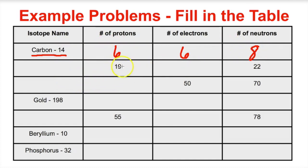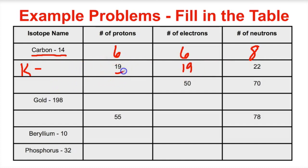What about this one — 19 protons? If we take a look on the periodic table, the element with atomic number 19 is going to be potassium, symbol K. So it has 19 protons and 19 electrons. What is the total mass of this atom? Protons plus neutrons: 19 plus 22 gives us 41. So the name of this isotope is potassium-41.